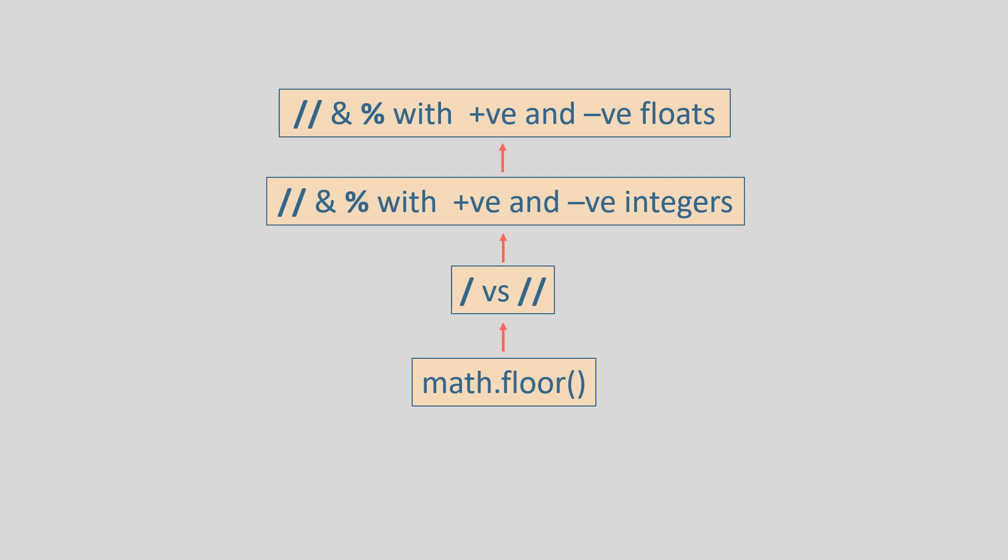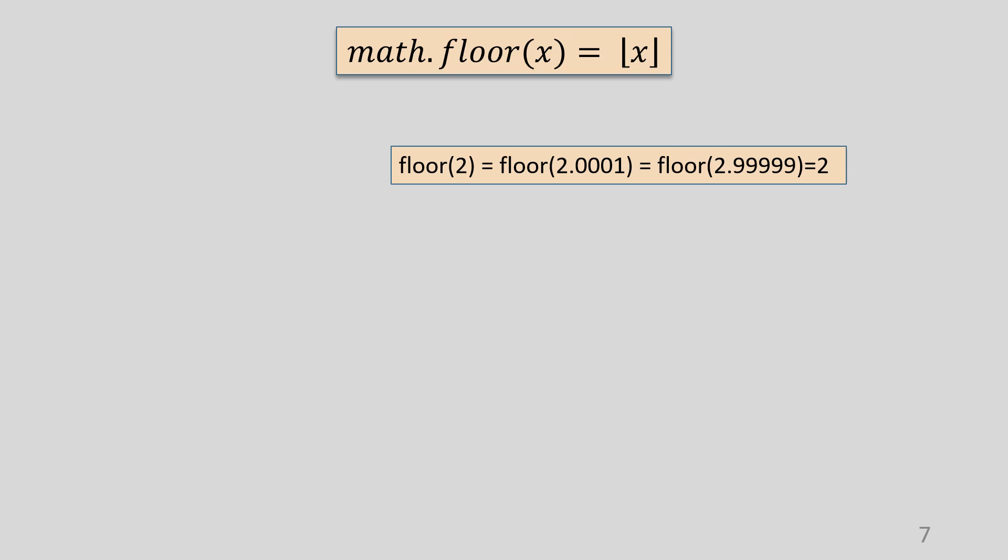Let us start with the floor method of the math module. The floor method takes a number, say x, as a parameter and returns the greatest integer not greater than x. This is the same as the greatest integer function in mathematics. For example, the floor of any number from 2 to less than 3 is 2. So the floor of 2 is 2, the floor of 2.0001 is 2, and the floor of 2.9999 is also 2. In other words, 2 is the floor of any number from 2 to less than 3.